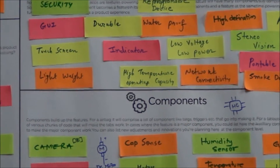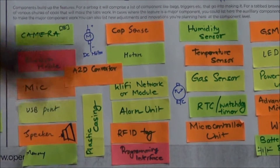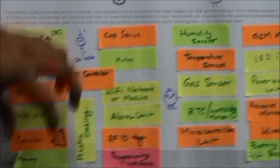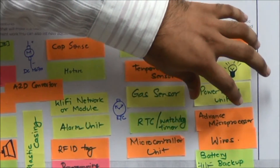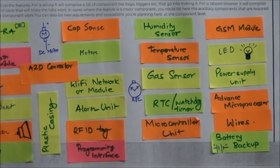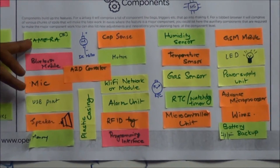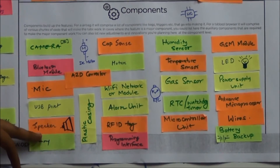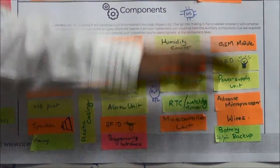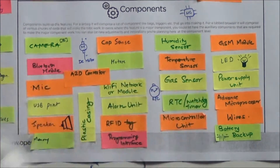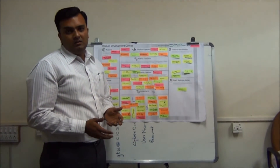Next is the key components the product should utilize in product development. All the general components which can be utilized for any product related to the attendance process have been written here. For reference, we can use a camera, speakers, memories, alarm unit, RFID tag, different sensors along with LEDs, and microprocessor units to have a programmable process.